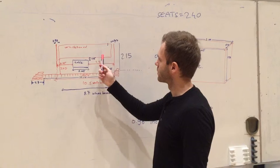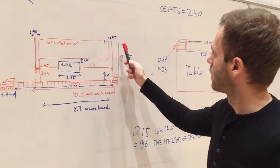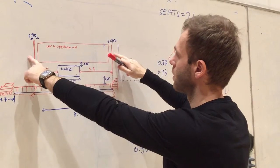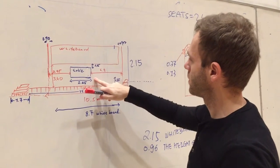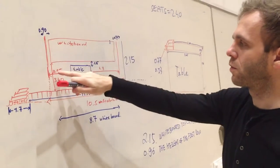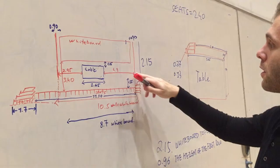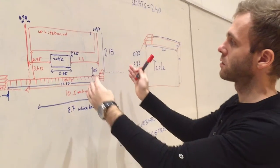So the whiteboard is 8.7 meters, the whole wall with the whiteboard is 10.5. The table is not exactly in the middle as you can see, because from the left is 2.95 and from the right it's 4.9, so it's like one meter to the left.